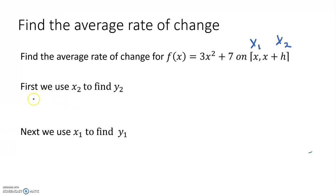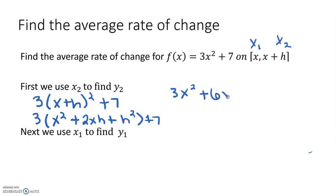We're going to use x₂ first to find y₂, so we plug in (x + h)² + 7. To find (x + h)², we use the distributive property or FOIL, and that gives us x² plus 2xh plus h². Bring down the plus 7. Then we distribute the 3 to get 3x² plus 6xh plus 3h² plus 7. This is y₂.